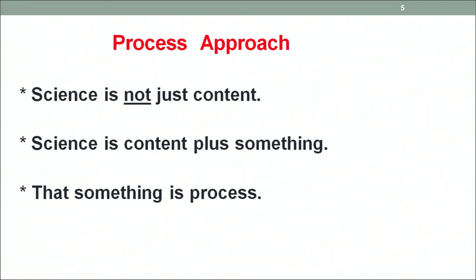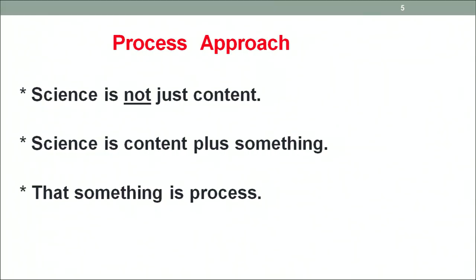After discussing the objectives of science, let us discuss the process approach — what is the nature of science ultimately? Science is not just content; it is not merely a body of information, a collection of laws and principles. It is content plus something, and that something is process. For example, 'water boils at 100°C' is content, but setting up the apparatus — porcelain, thermometer, burner — measuring, recording, and arriving at a conclusion is the process. Science is a body of knowledge as well as a way of arriving at that knowledge.